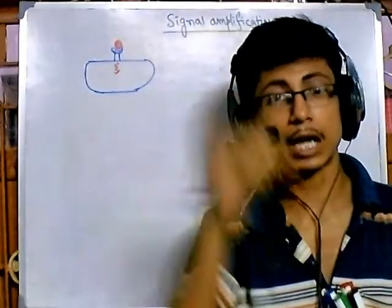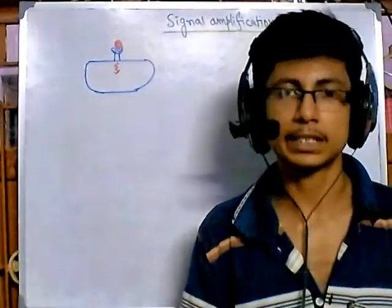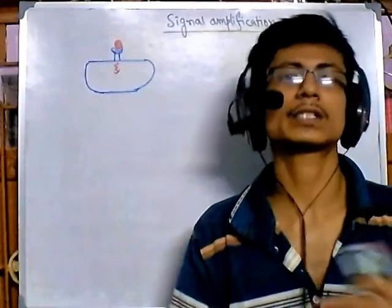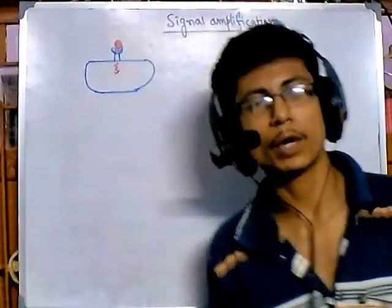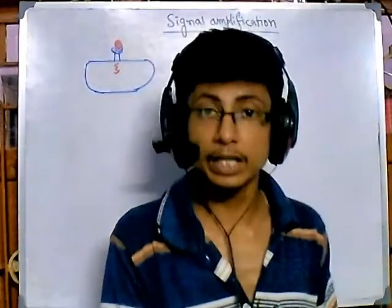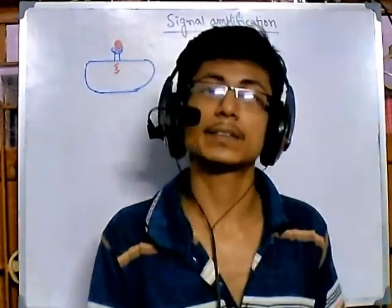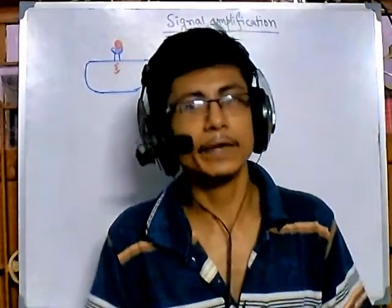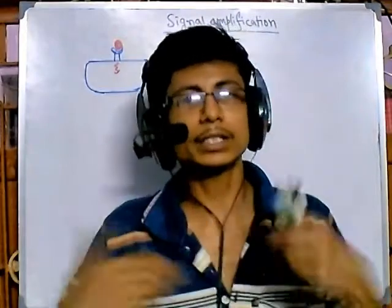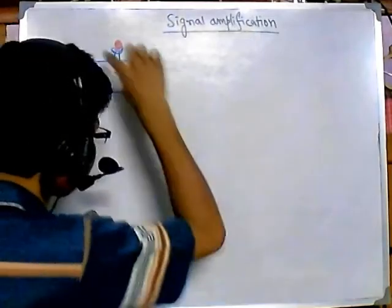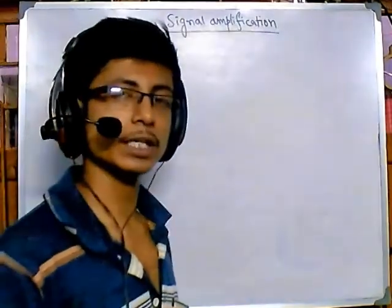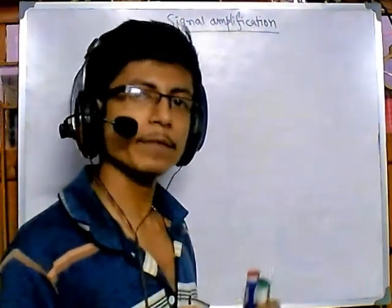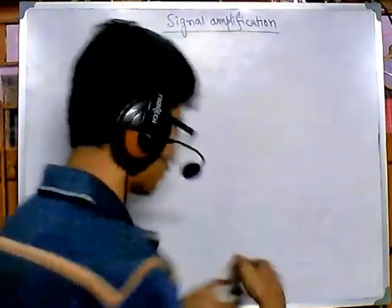The signal messenger sits on the signal receptor and passes the signal downstream through secondary messengers, tertiary messengers, and so on. Finally, that signal reaches the target protein molecule, and once the signal is reached, the protein and the cell behave accordingly. When the signal travels inside the cell, there are several rounds of amplification which are actually required.